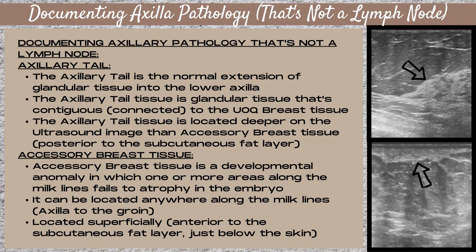Supernumerary — extra nipples — can also occur anywhere along the milk lines. A common site for accessory breast tissue is in the axilla, and sometimes this will even have a nipple associated with it. Accessory breast tissue on the ultrasound is located superficially — it's anterior to the subcutaneous fat layer and just below the skin line. If you're looking at the ultrasound image, you'll see the skin line, then a patch of glandular tissue, and then fat located posterior to the accessory breast tissue.